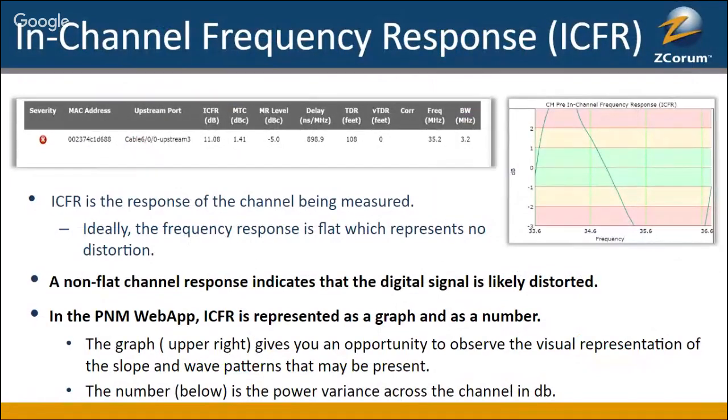All right. So lastly, what we have here is a proactive network maintenance platform. Again, we've talked about the graphical representation of ICFR, as you see in the upper right, also in a more table view, as you see in the upper left, on a per modem view, this particular modem, as you can see in the first column of severity, it is labeled a critical modem, where we said, Hey, you definitely want to stay below three dB peak to valley. In this particular example, in column number four, where it says ICFR, we're at 11 dB. So definitely this fellow is off the charts, off the charts. Absolutely.